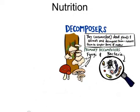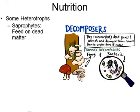When it comes to how bacteria get nutrition, some are decomposers known as saprophytes, meaning they feed on dead matter. Bacteria and fungi are both saprophytes. They release digestive enzymes onto whatever they're living on — like mushrooms on a tree or bacteria on a dead animal — breaking it down and then absorbing the nutrients. They don't ingest food like consumers do; instead, they absorb it.